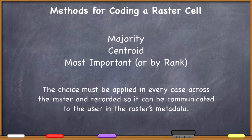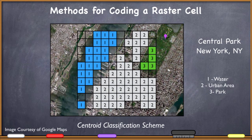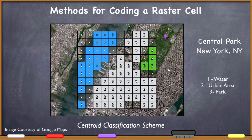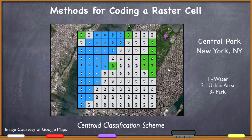Let's use a centroid classification scheme on the remaining mixed pixels. I'll overlay dots at the very center of every cell, then look at what's at each center — is it water, urban, or park — and code the cell accordingly. If you do that, this is what you end up with. That's what's at the very center of each cell, and that's what coding this raster by the centroid method would look like as a land cover raster.